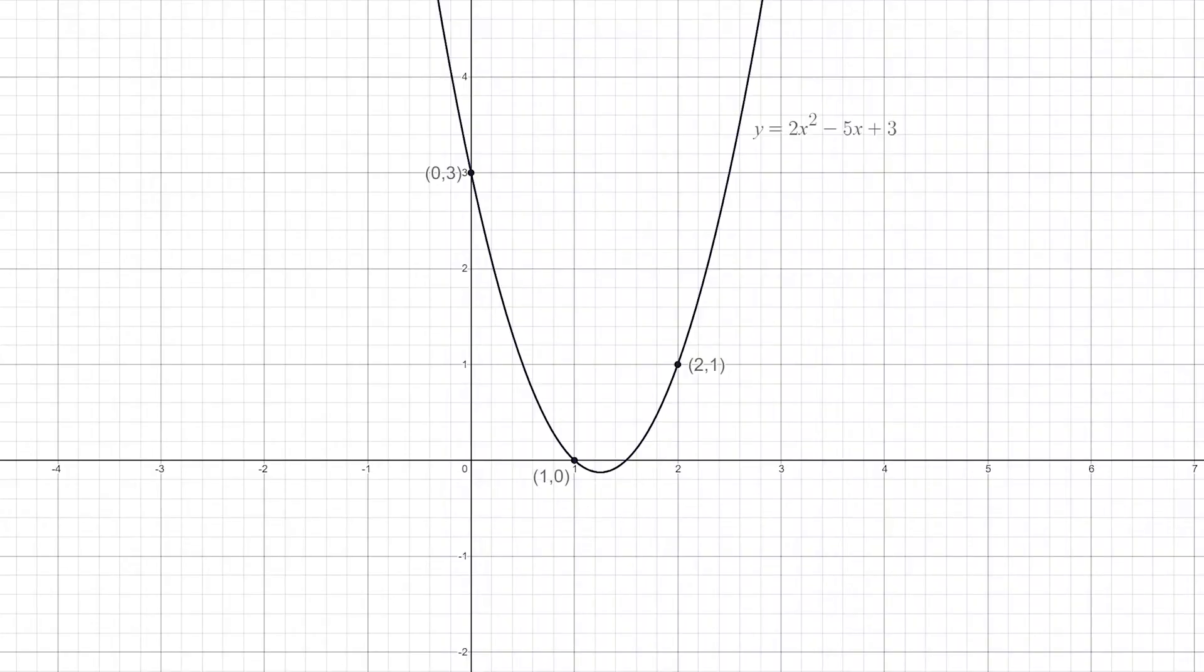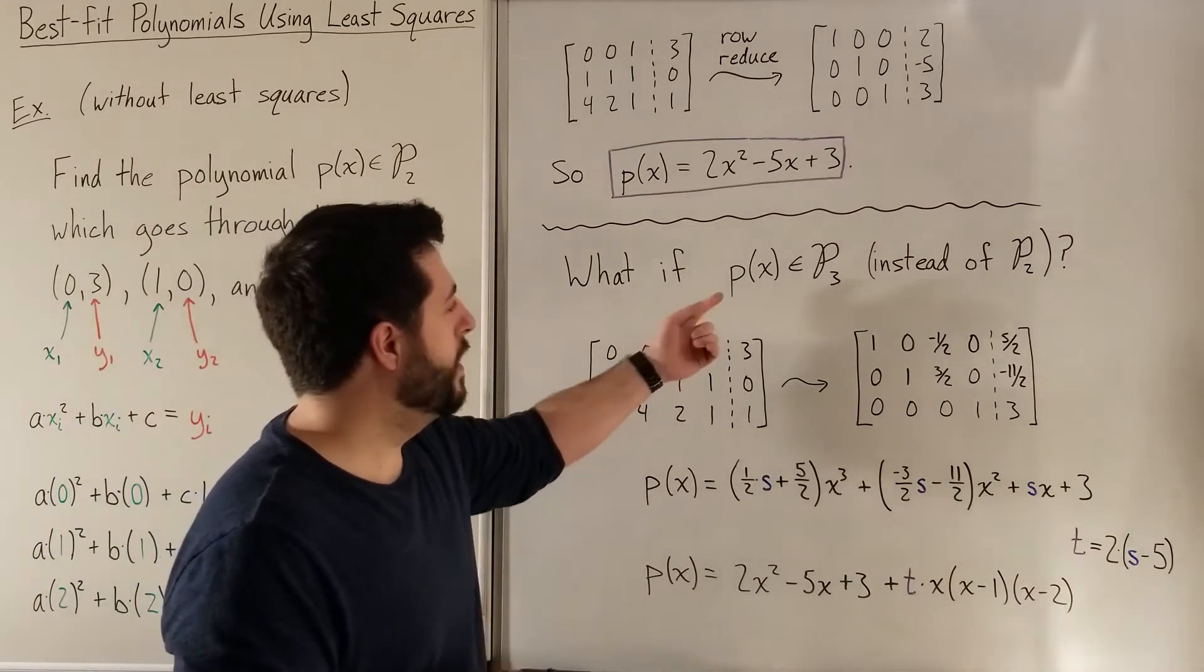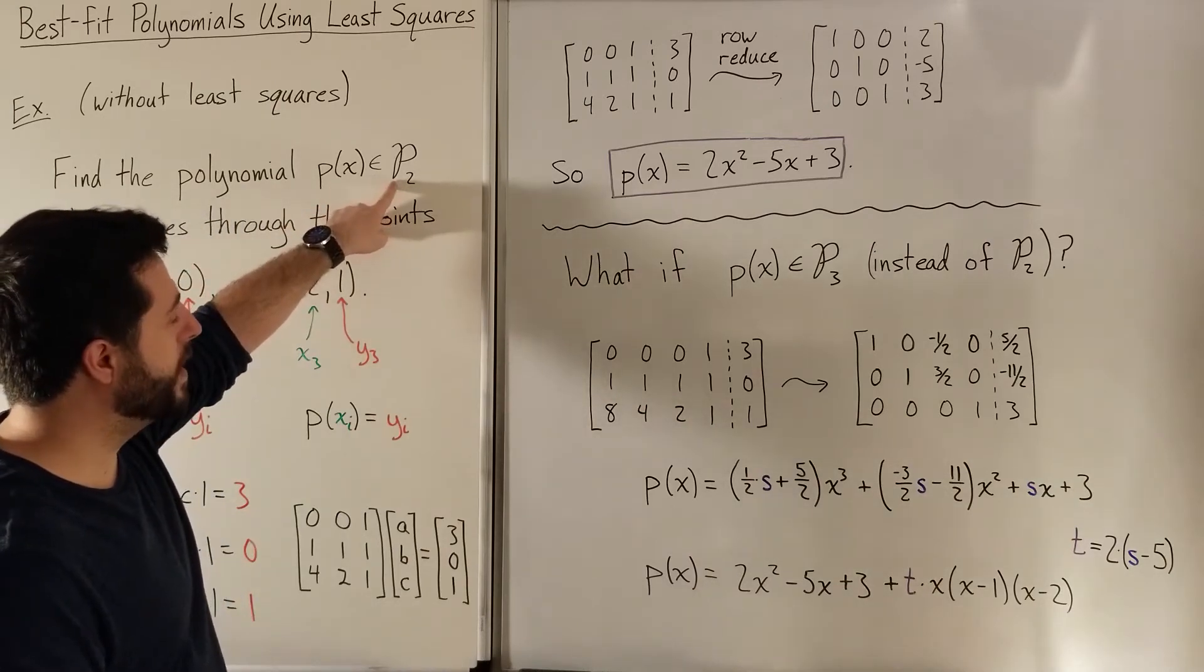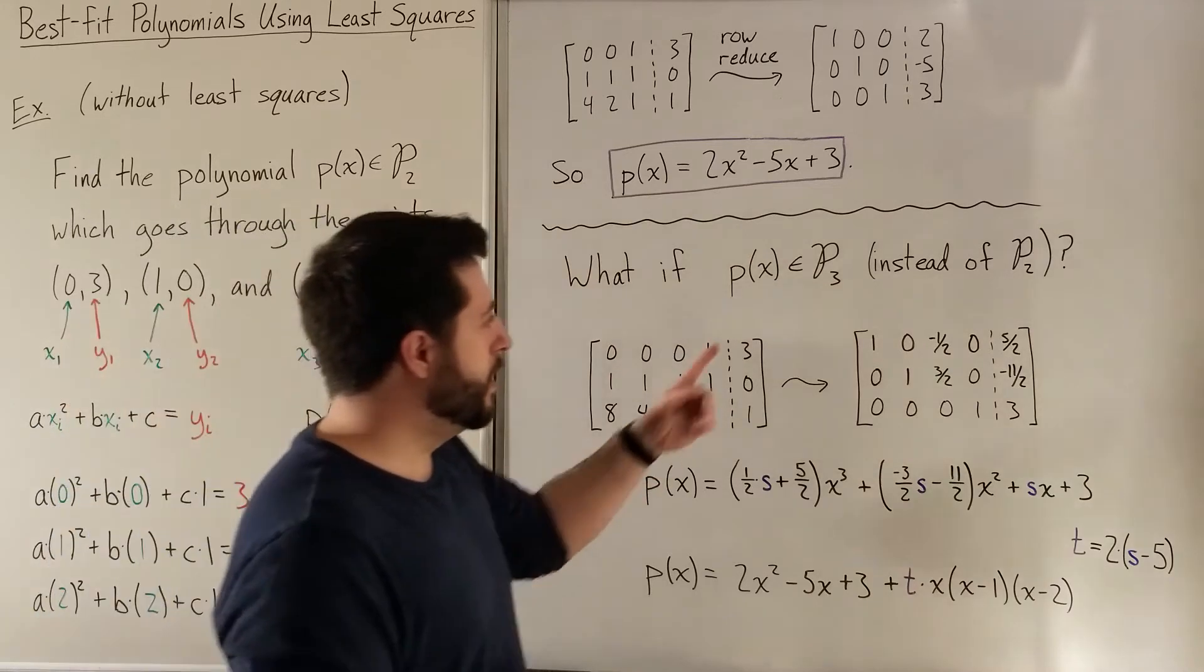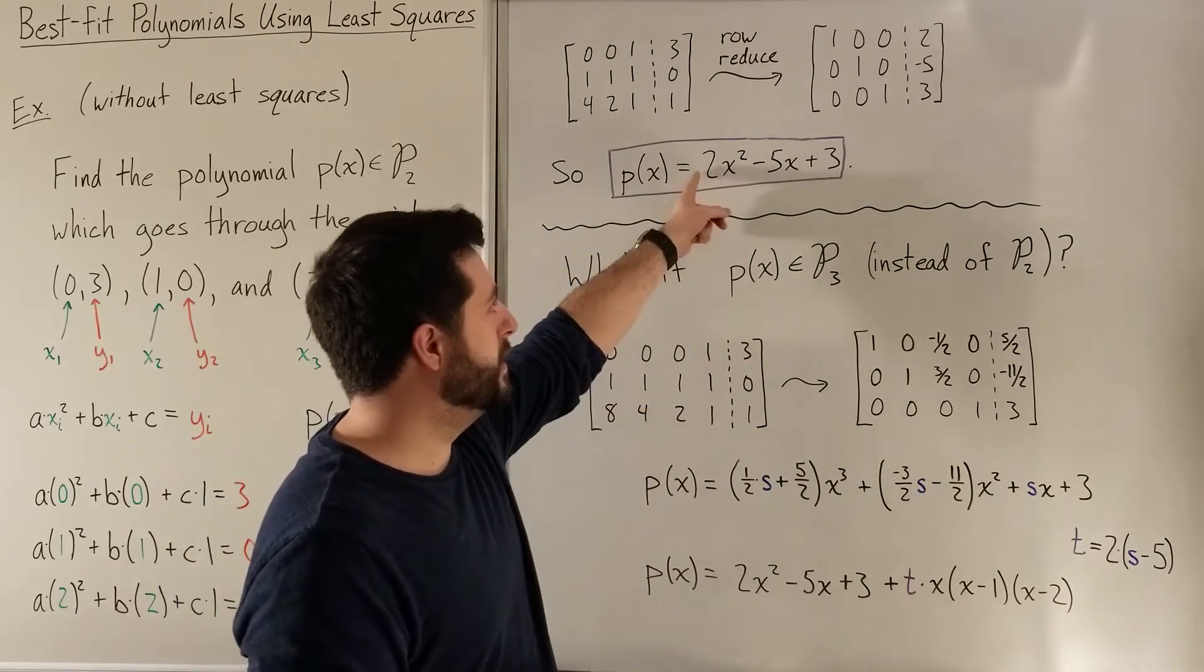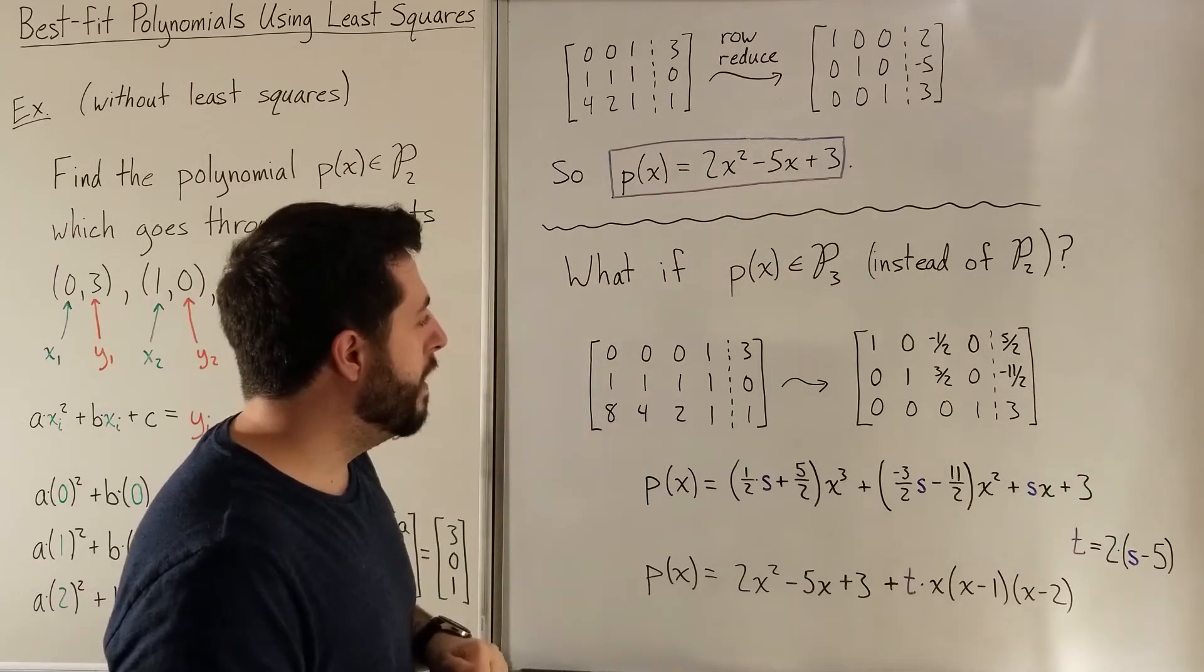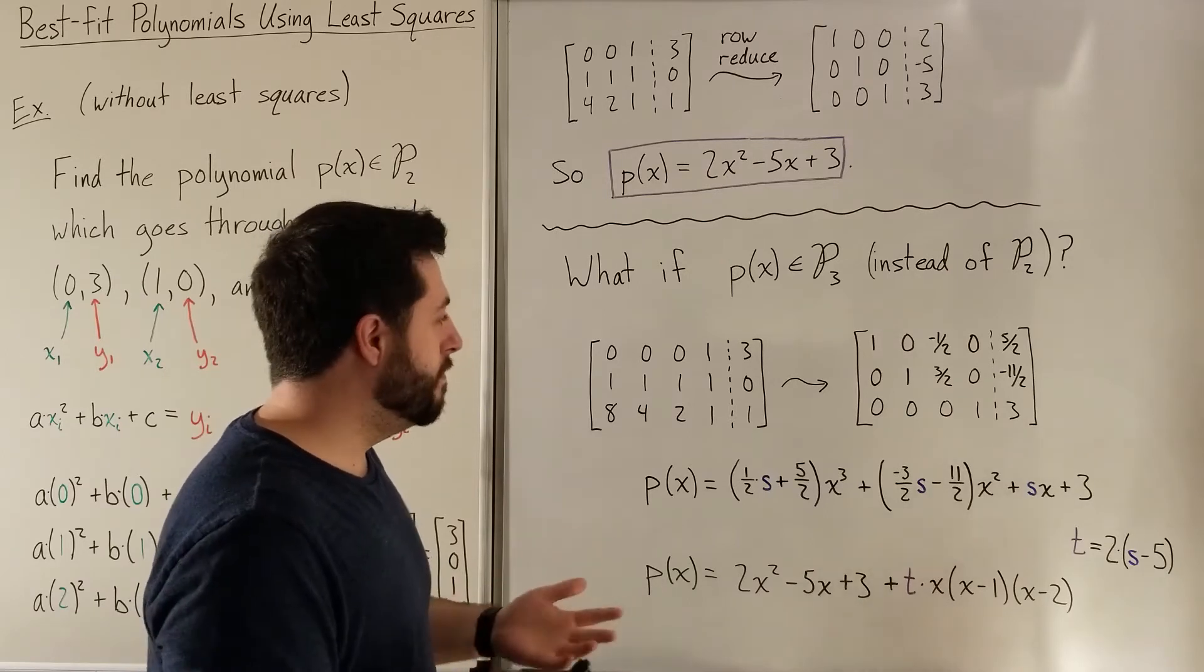And here's a picture of that. So now I want to change this problem slightly. I want to say, what happens if instead of only allowing us to have up to x^2 terms, what if we were allowed to also have an x^3 term? So in other words, what happens if our polynomial is in the set of polynomials of degree at most 3 instead of degree at most 2? Well, hopefully this will still be a solution because this has degree at most 3. And we might find some others.